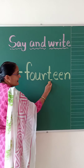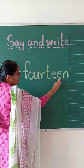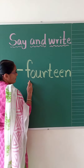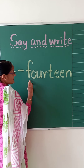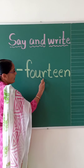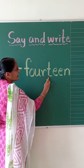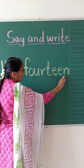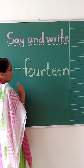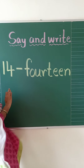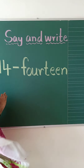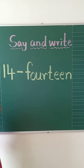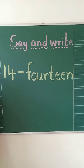You have to add only T-E-E-N. The spelling of 14 is F-O-U-R-T-E-E-N. You have to write the spelling in your square line book. I will show you how to write it in the word book.